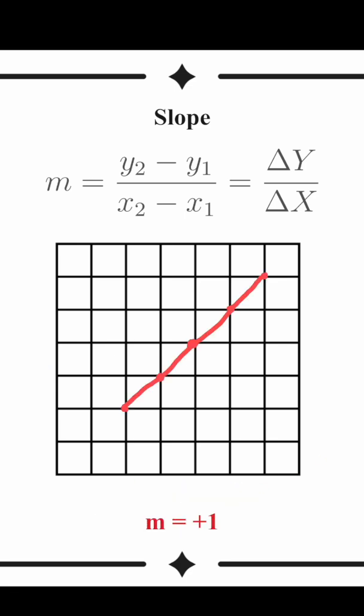A positive slope looks like this. You can see how the y value increases as the x value increases too. As the slope value gets bigger, you can see how the slope gets steeper. This here is a negative slope because y is decreasing as x increases.